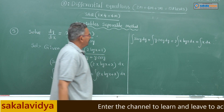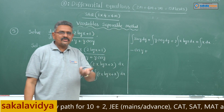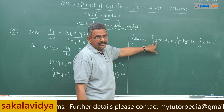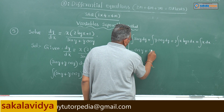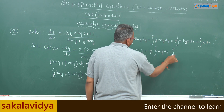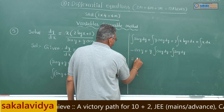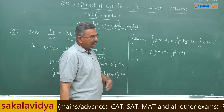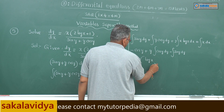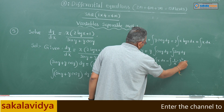Let us integrate it. Sin y integrates to minus cos y. For the y cos y term we use the UV method — the LIATE rule — since it is an algebraic function times a trigonometric function. So algebraic function is first: y times integral of cos y dy, minus derivative of y (which is 1) times integral of cos y dy, that is sin y. Similarly on the RHS, log x is the first function times integral of x dx, minus derivative of log x (which is 1/x) times integral of x dx (which is x squared by 2), dx.